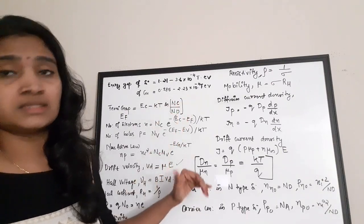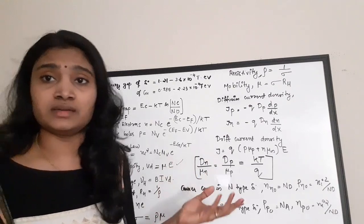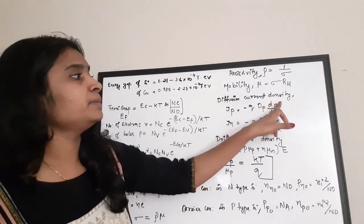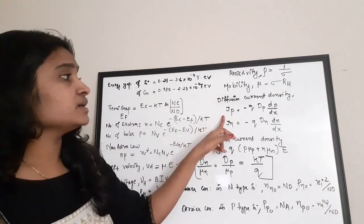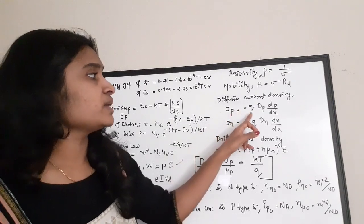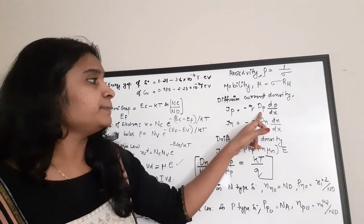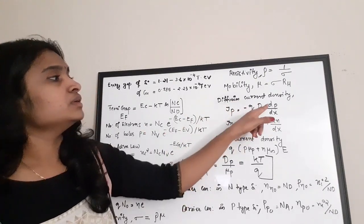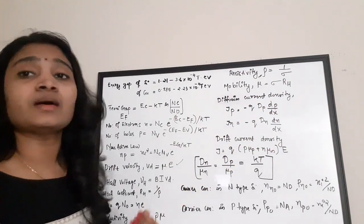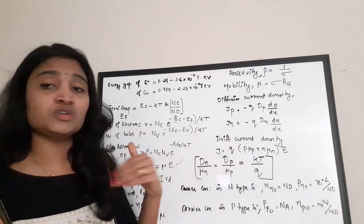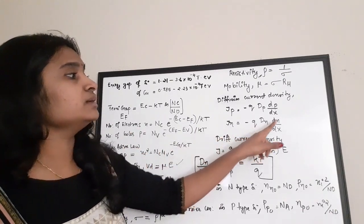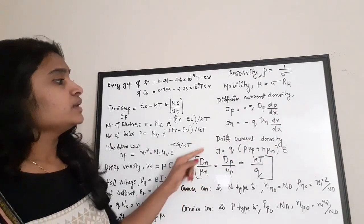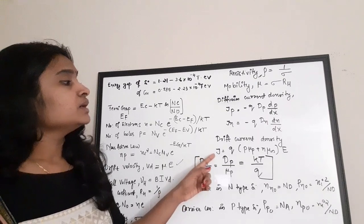The diffusion current density due to holes is: Jp = −q × Dp × (dp/dx), where Jp is the hole current density, q is charge, Dp is the diffusion coefficient for holes, and p is the number of holes. The diffusion current density due to electrons is: Jn = q × Dn × (dn/dx), where Dn is the diffusion coefficient for electrons.